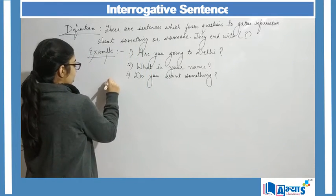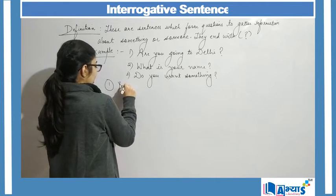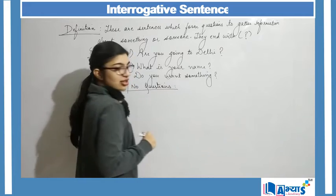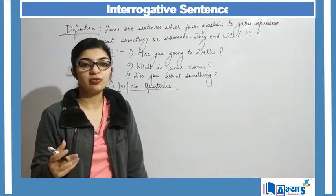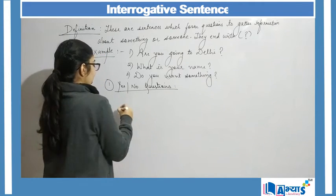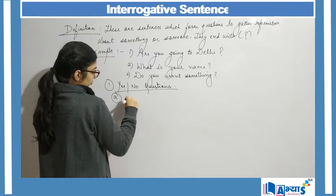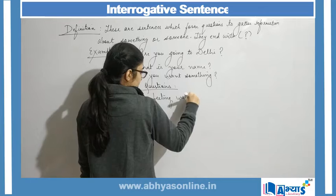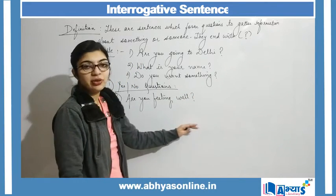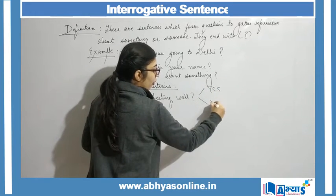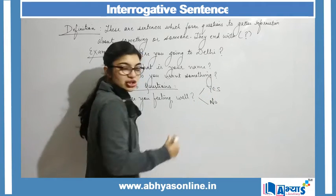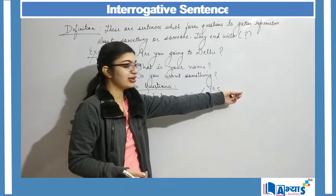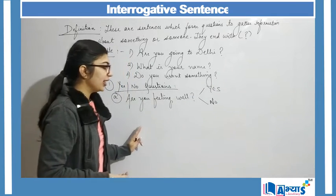The first way of asking a question is yes/no questions. These are those questions the answer to which we get as yes or no. For example, 'Are you feeling well?' When I am asking this question, the answer can be either yes or no. Depending upon the condition of the person, if the person is feeling well, the answer is yes, and if not, the answer will be no.